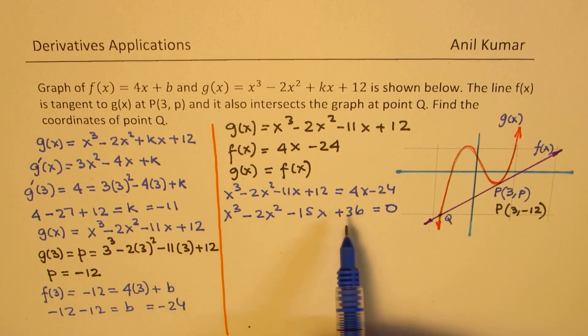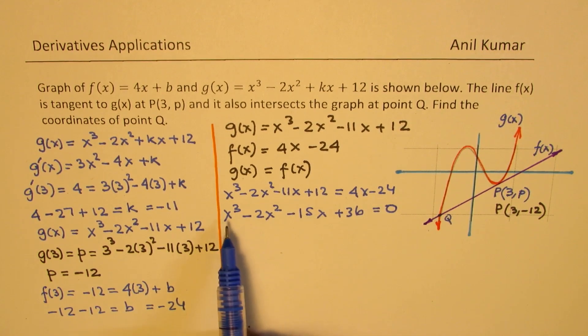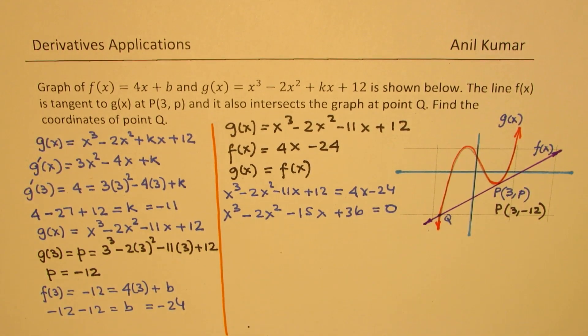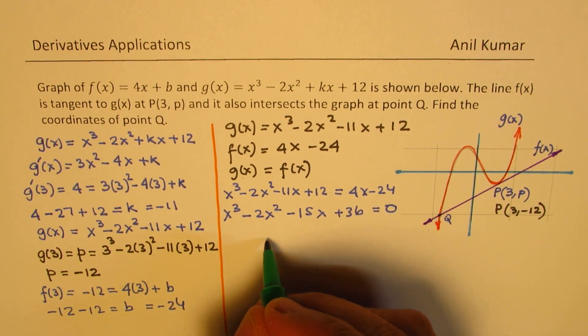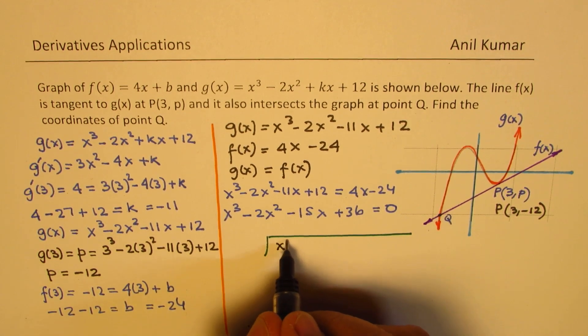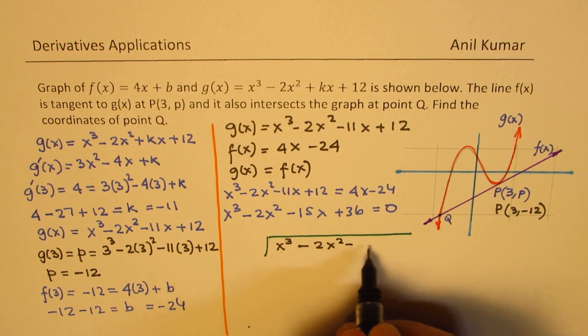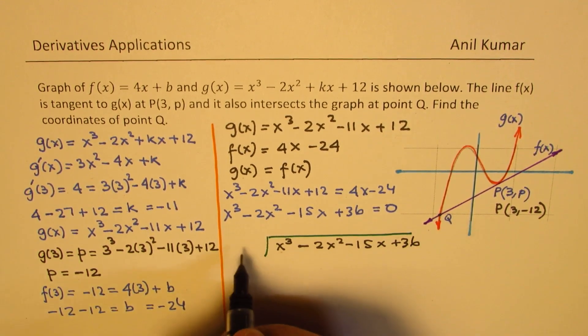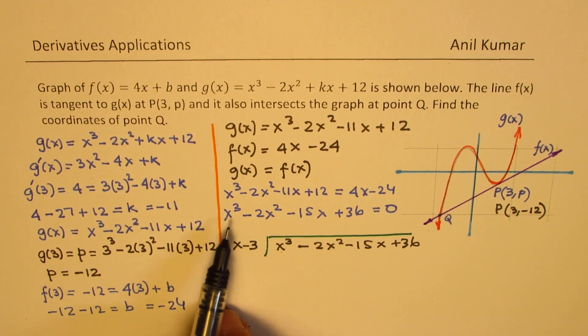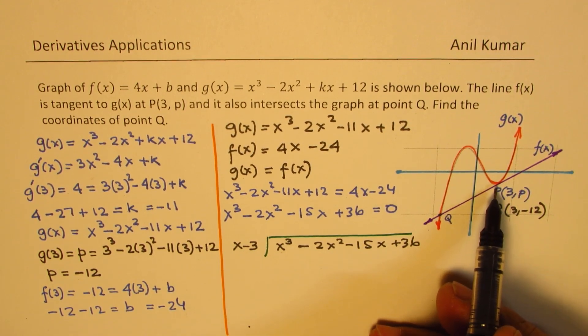Let's solve for this. We have x³ - 2x² - 11x + 12 = 4x - 24. So x³ - 2x² - 15x + 36 = 0. Now it is important to note that one of the solutions is definitely this point, which is x = 3. So that means x - 3 is a factor. So we could actually divide this by x - 3, and then we'll get a quadratic function to figure out the point Q.